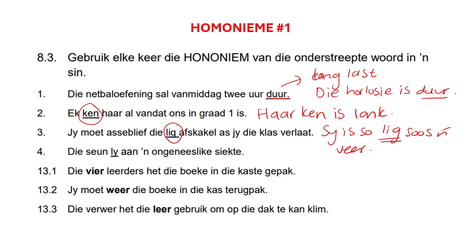'Die sien lei aan een ongeneselike sekte.' So the subject is enduring an incurable sickness — lei here means to suffer. But lei can also mean to lead. So we can say 'Johan lei die span,' meaning he leads the team.